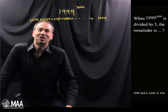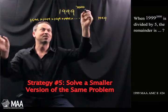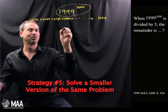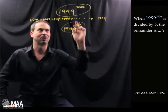So I'm going to employ strategy number 5 which is to solve a smaller version of the same problem. For example, a smaller version would be don't do 1999 to the 2,000th power, maybe do 1999 to just say the 20th power. That's a smaller version, maybe give some insights how to do the big version.